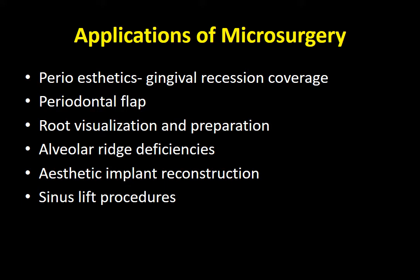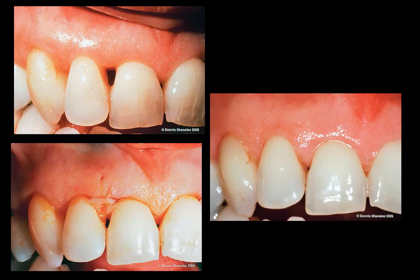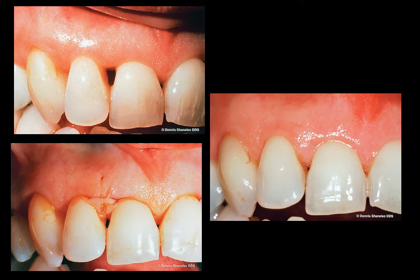An example is interdental papillary reconstruction. In picture one, you can see a black triangle between the central incisors, lateral incisors, and first premolar — an aesthetic concern for the patient. With microsurgical surgery, the internal papilla is pushed in the coronal direction and a thin microsurgical suture of 6-0 or 9-0 is placed. After three months, you can expect interdental papillary closure and closure of the black triangle.